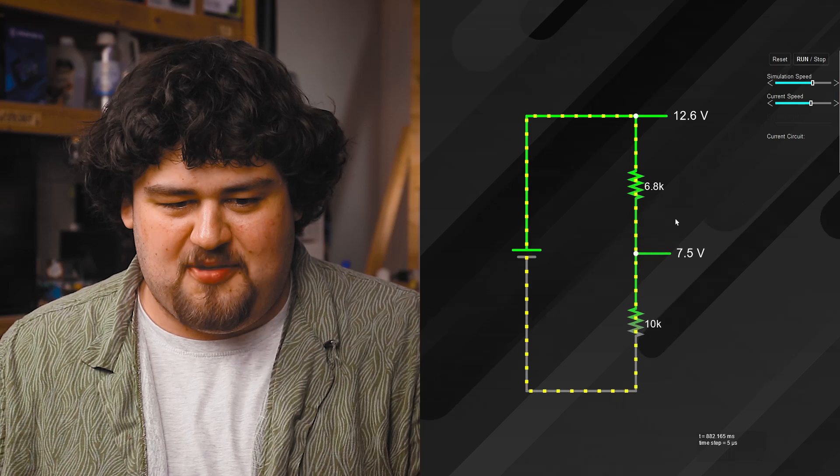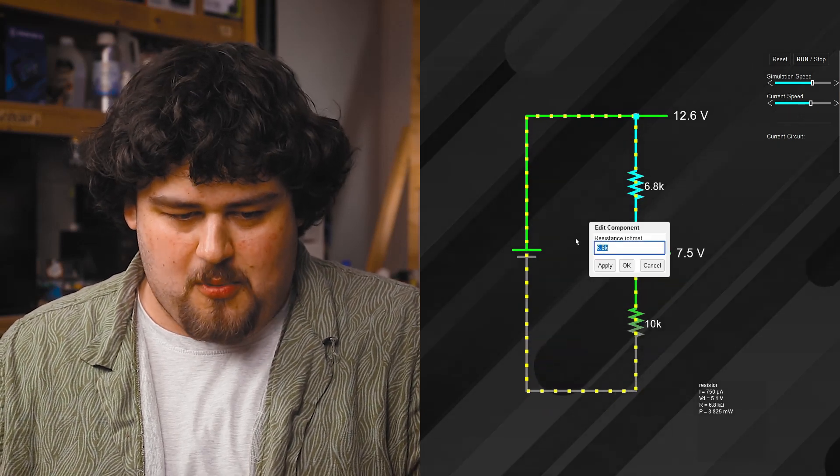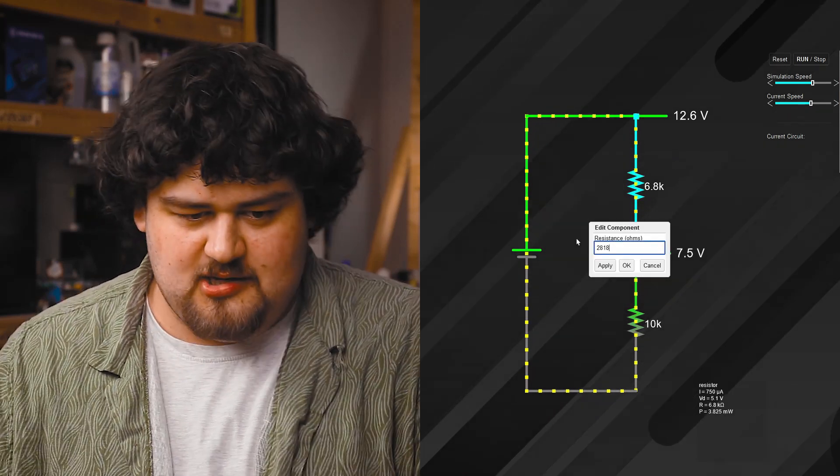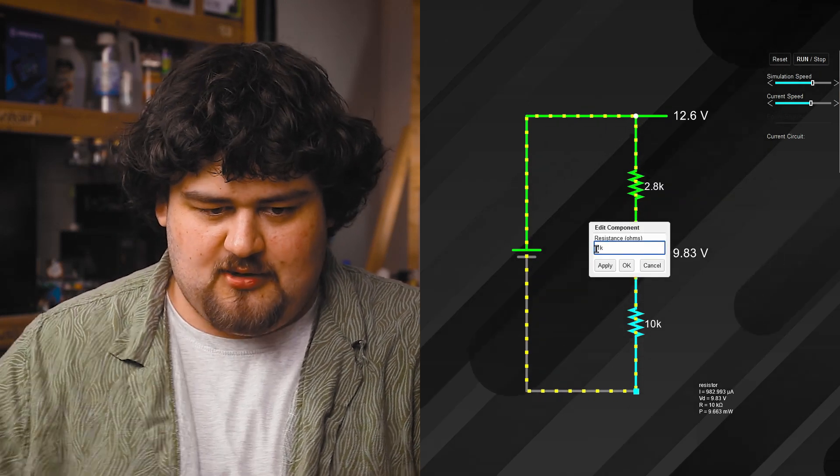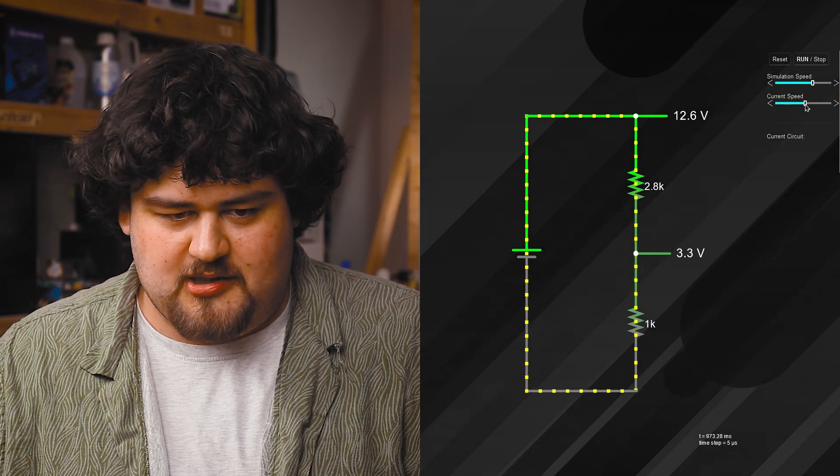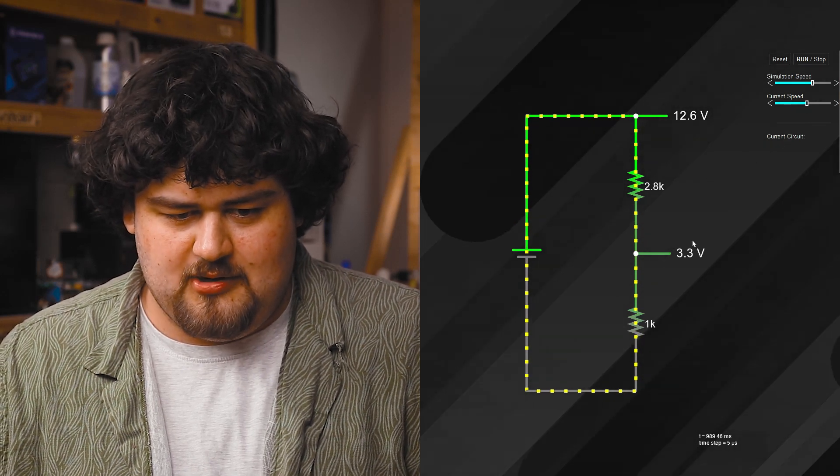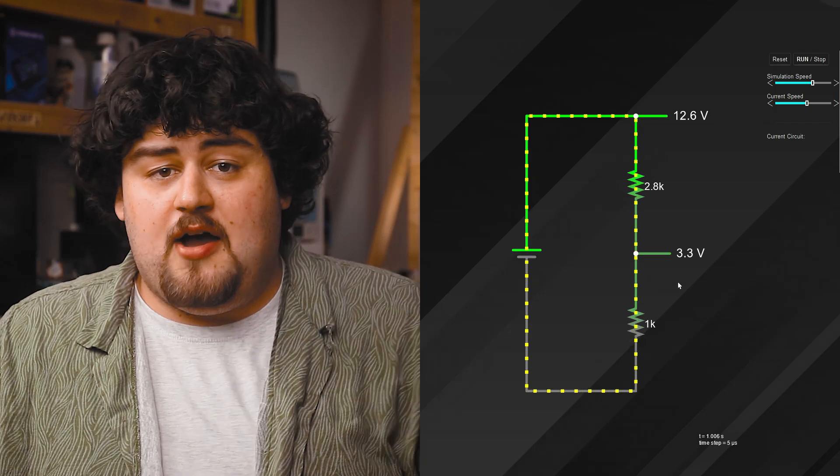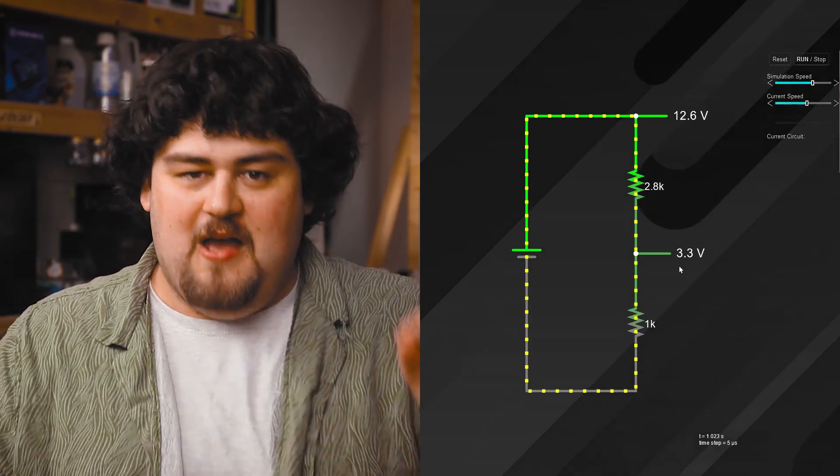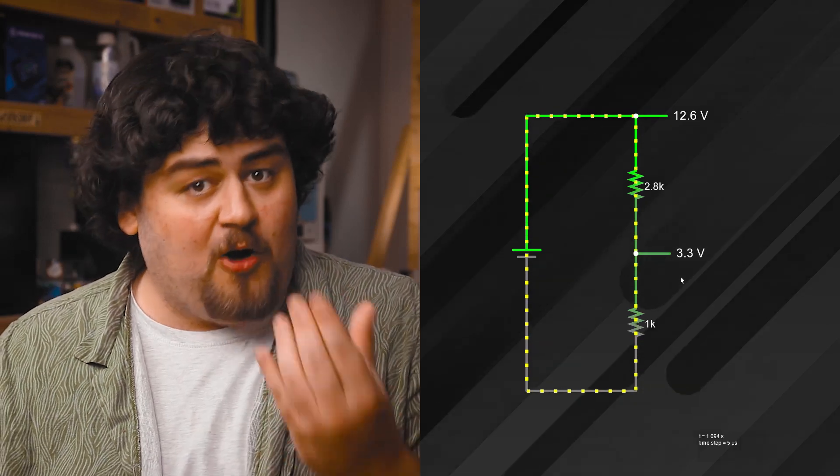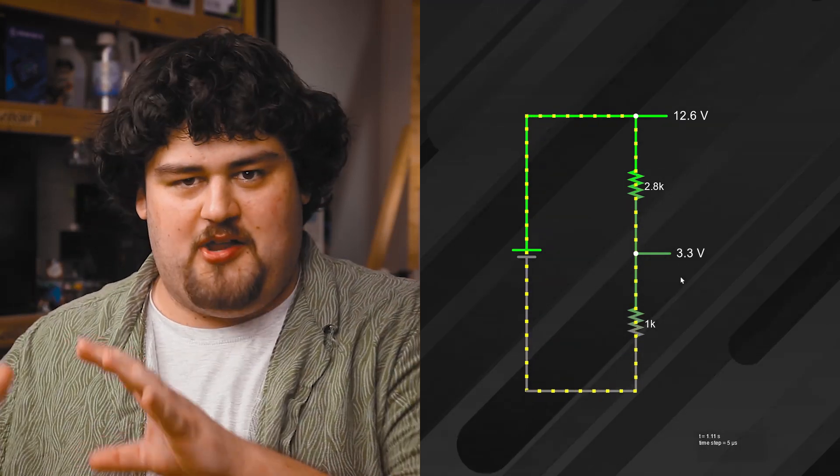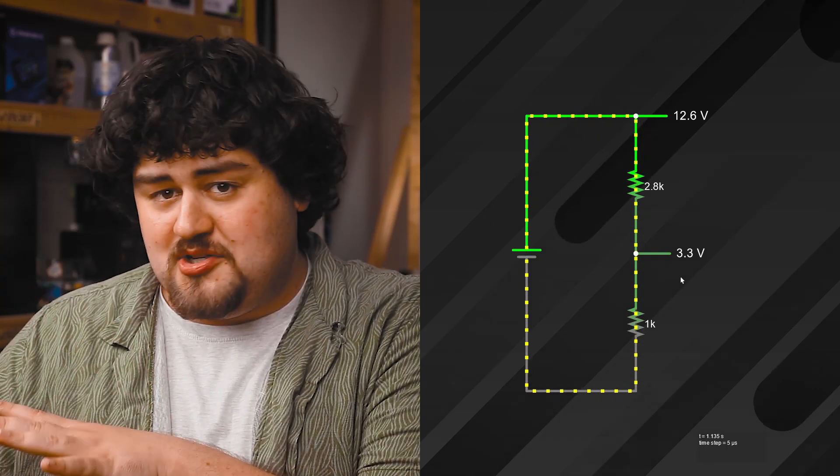Let's double-check our math by setting R1 to 2818 and setting R2 to 1000. The current's flowing a little too quick, so let's slow it down so we can see what's going on. As you can see, we get our nice 3.3 volt output, very nice. We could also use this tool to calculate the values of the resistors we need with trial and error without using the voltage divider equation.